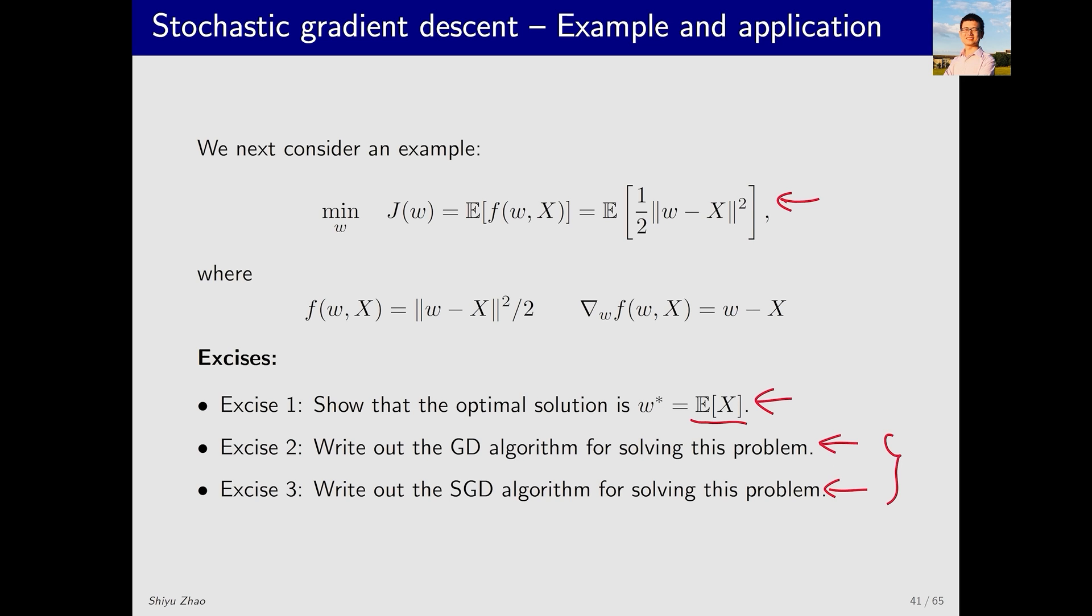We next briefly derive this. We know that for J to reach its minimum, there is a necessary condition, which is that the gradient of J(w) should be equal to zero. Let's solve this and see what w we can get. The gradient outside can be taken inside, so we have this.